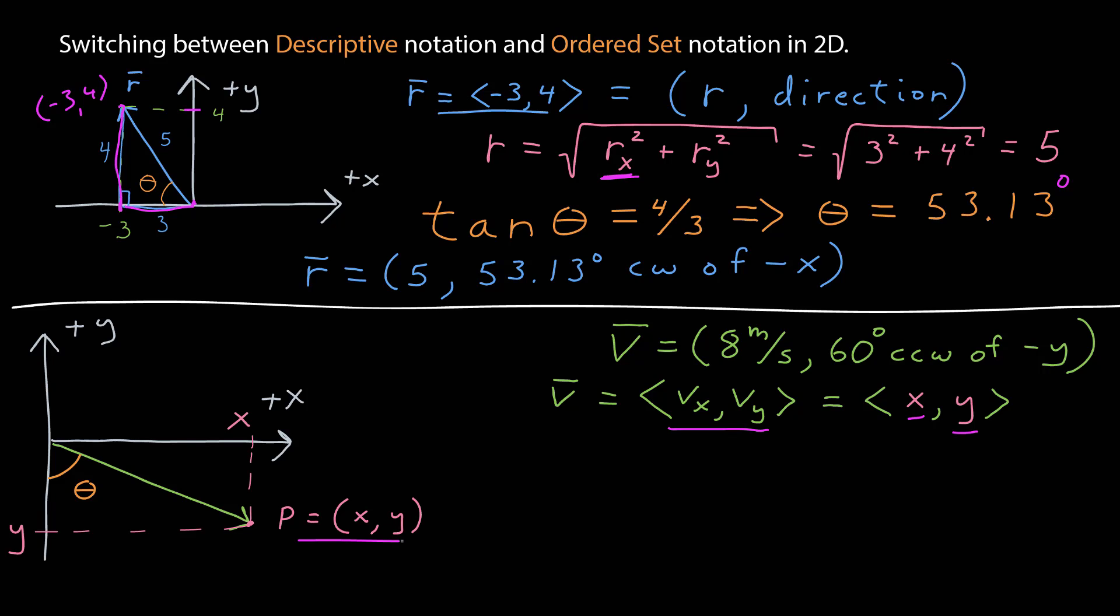So, to find that set, I want to find the x and the y coordinate associated with that point. So, I draw my lines to the x and the y axis, and once I do that, I can establish a right triangle.